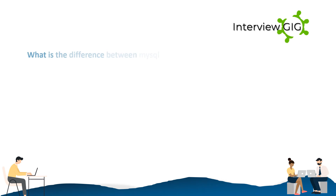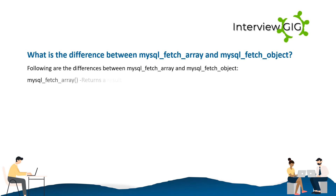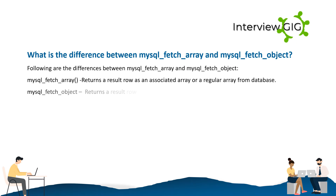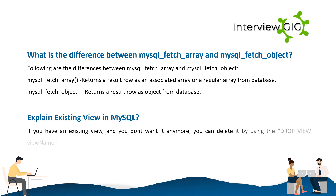What is the difference between mysql_fetch_array and mysql_fetch_object? mysql_fetch_array returns a result row as an associated array or a regular array from the database. mysql_fetch_object returns a result row as an object from the database.